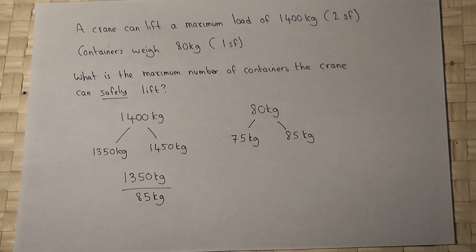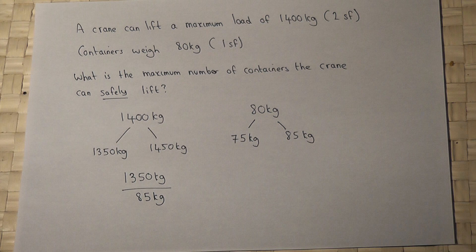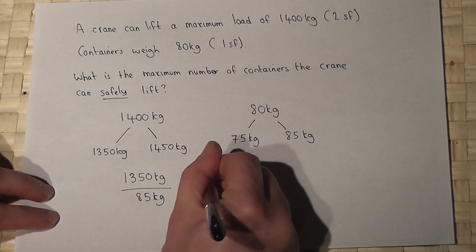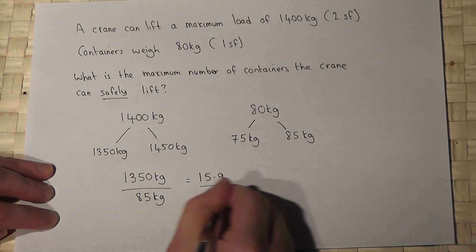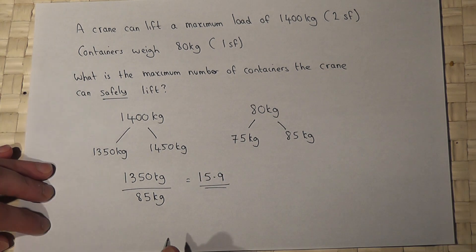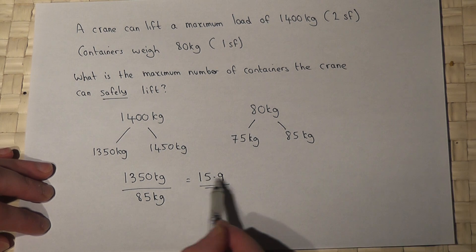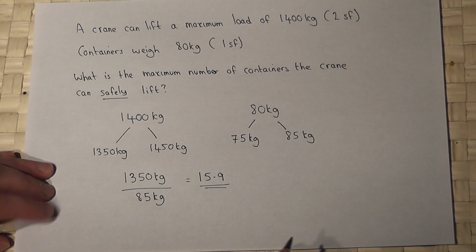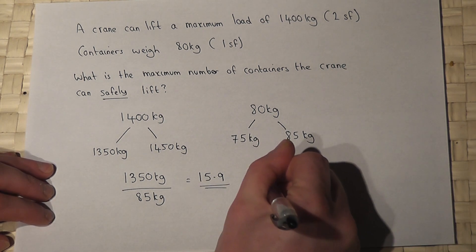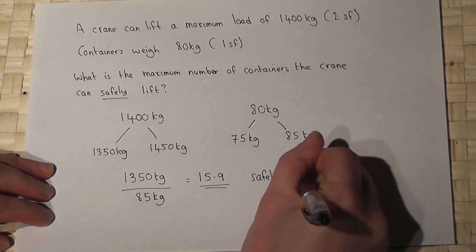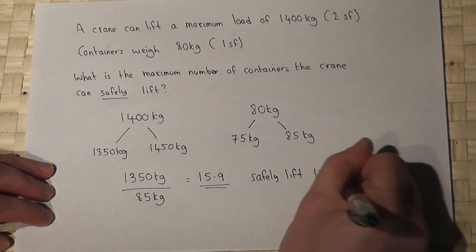So if I work out 1,350 divided by 85, I get 15.9. So in the worst case scenario the crane can only lift 15.9 containers. In other words, it can safely lift 15 containers.